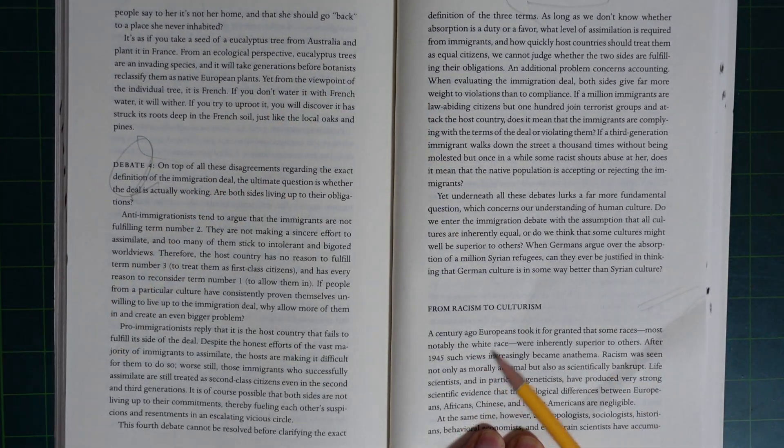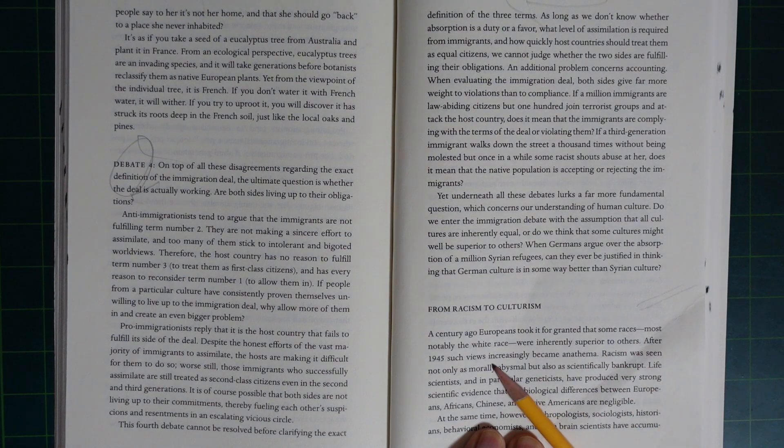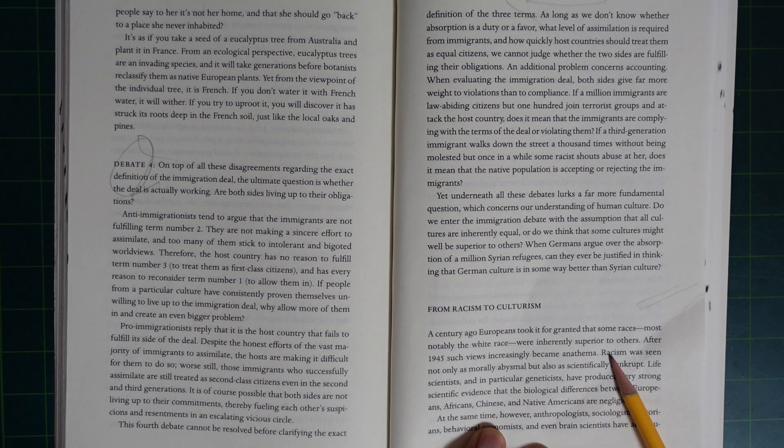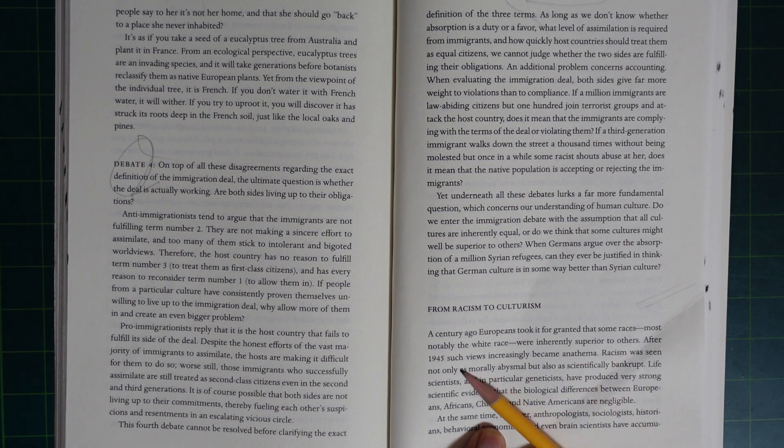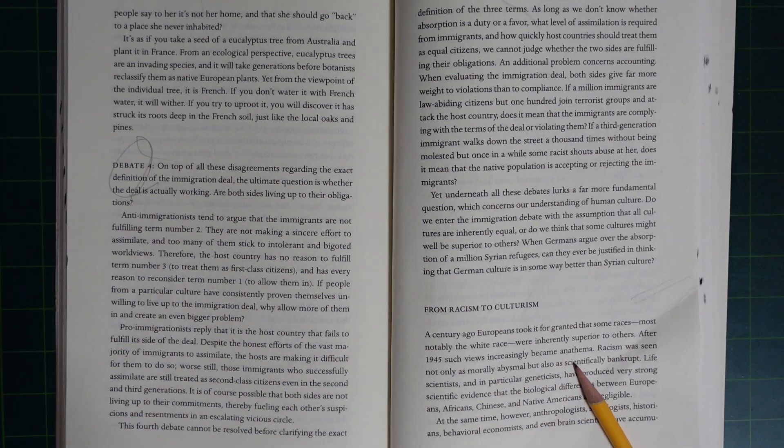A century ago, Europeans took it for granted that some races, most notably the white race, were inherently superior to others. After 1945, such views increasingly became anathema.